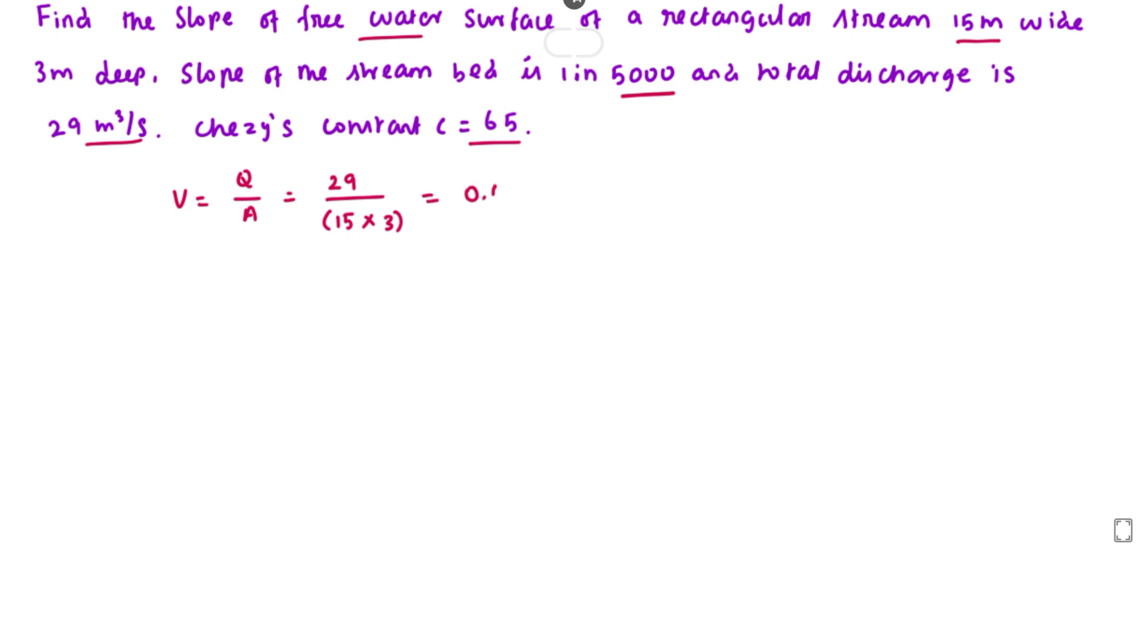We get the value of 0.644 meters per second. The units work out: meter cubed per second divided by meter squared gives meters per second.